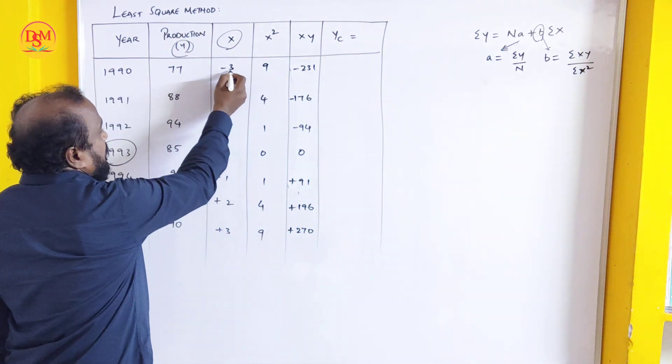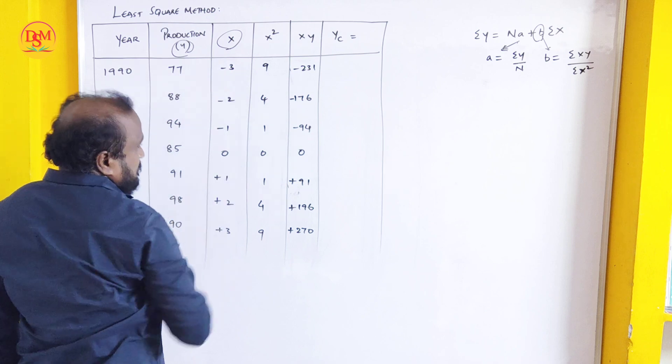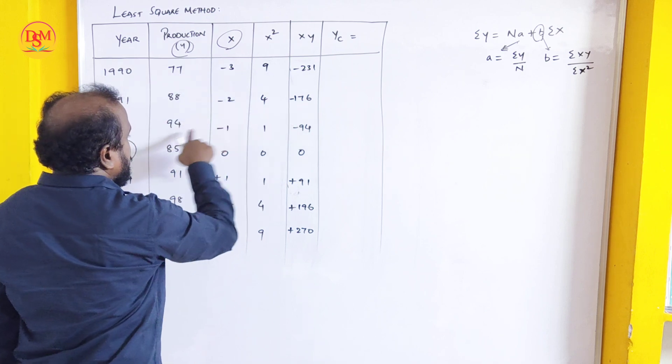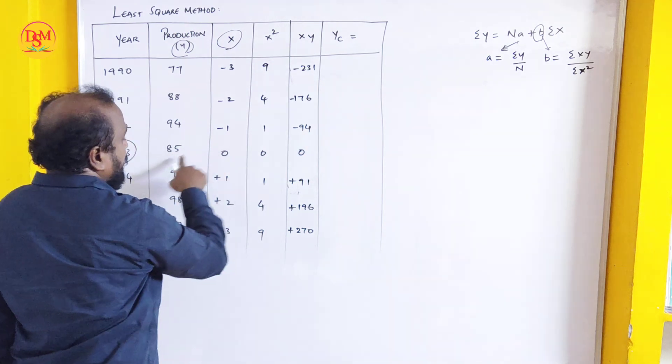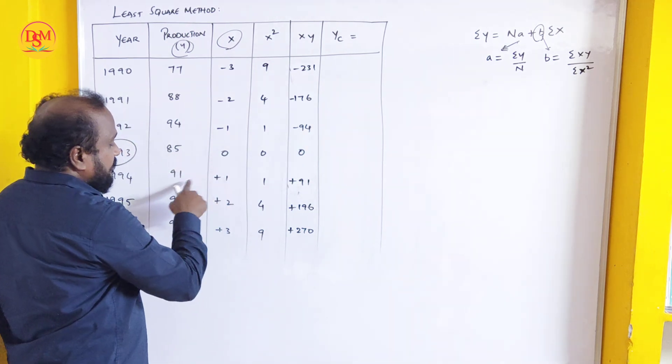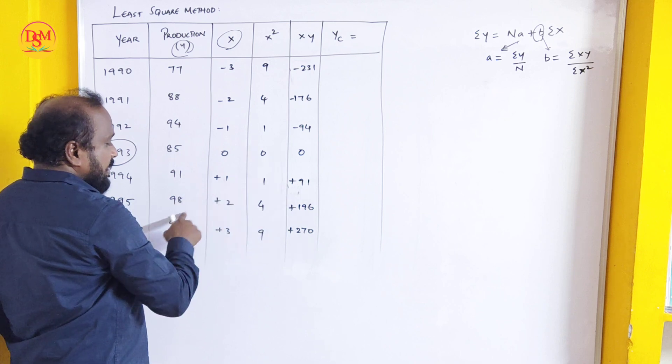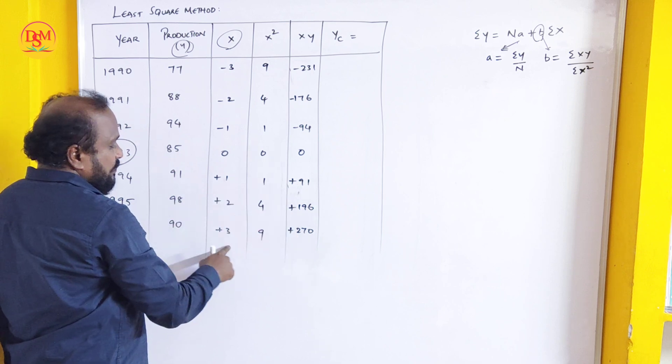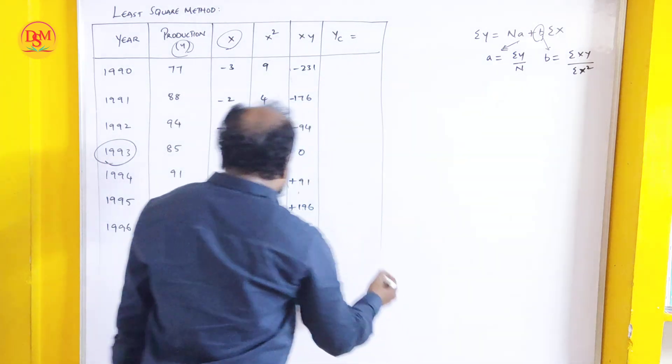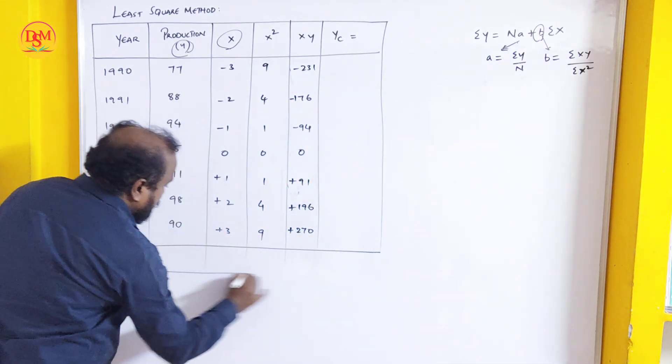85 into 0 is 0. 91 into plus 1 is 91. This will be in plus value. 98 into 2 is 196. 90 into 3 is 270. We have calculated x, y value. We have to calculate the totals.